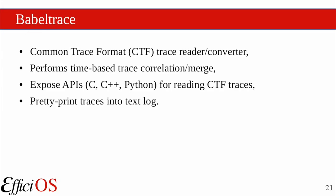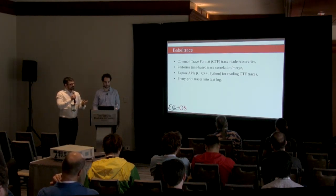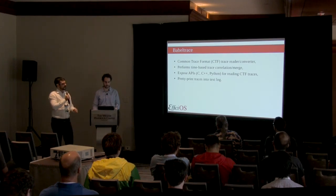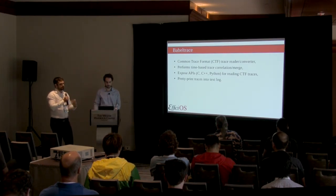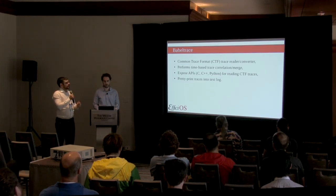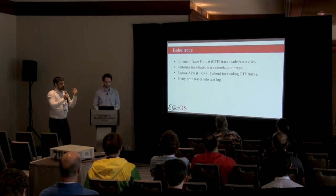Some people prefer text over a graphical interface, so all the LTTNG analyses also work in batch mode and output to the console, in addition to being integrated with the GUI. BabelTrace is the building block on which the analyses are created — it's a Common Trace Format trace reader and converter that handles time correlation between CPUs. It exposes C, C++, and Python APIs to read CTF traces created by LTTNG, and now a few other tracers including PERF can create CTF traces as well.